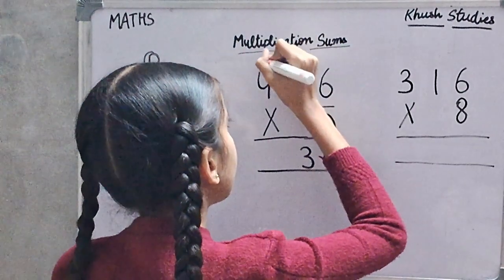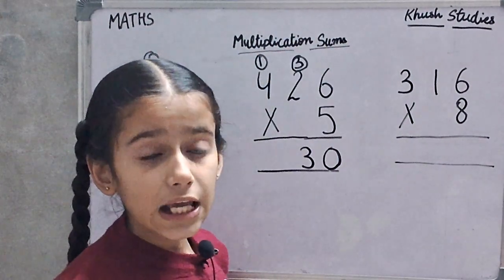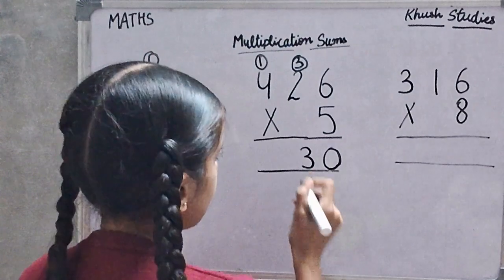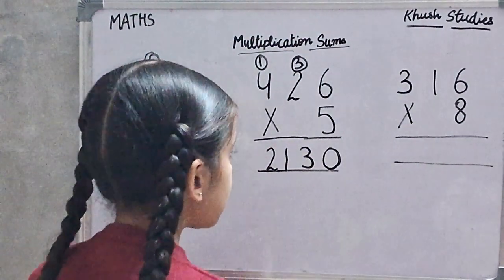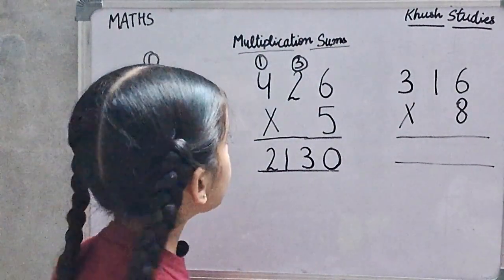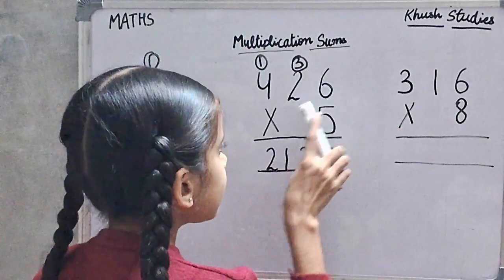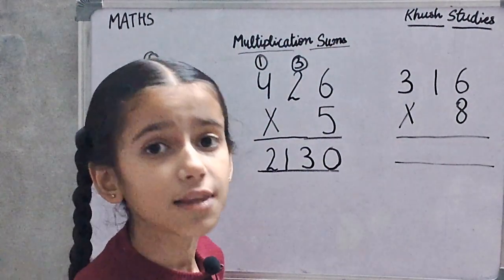We will write 1 on 4. 5 times 4 is 20. 20 plus 1 is 21. So the answer is 2130. 426 multiply by 5 is 2130.